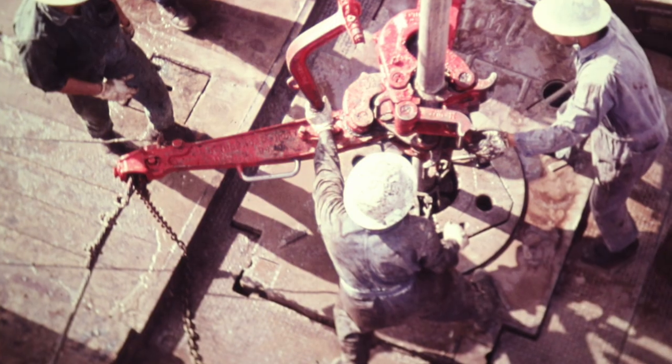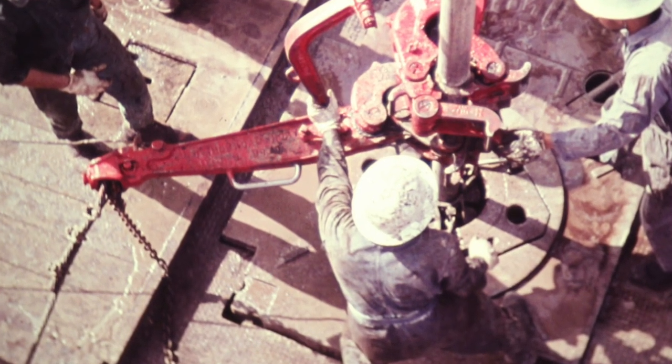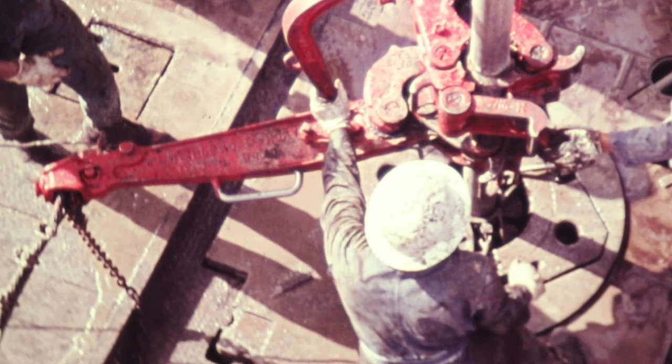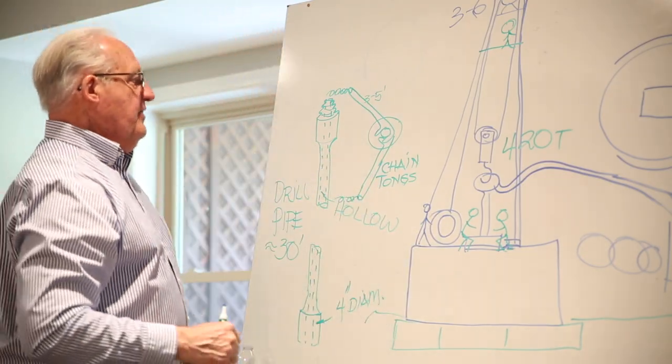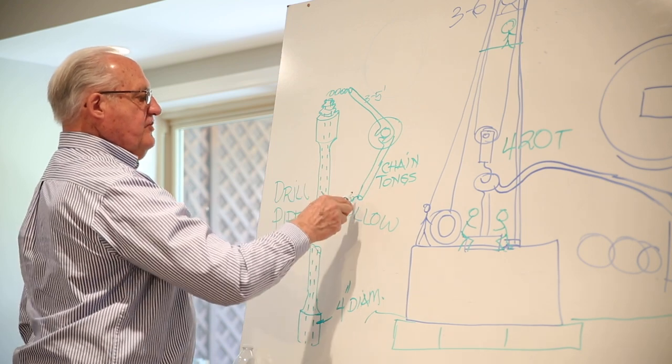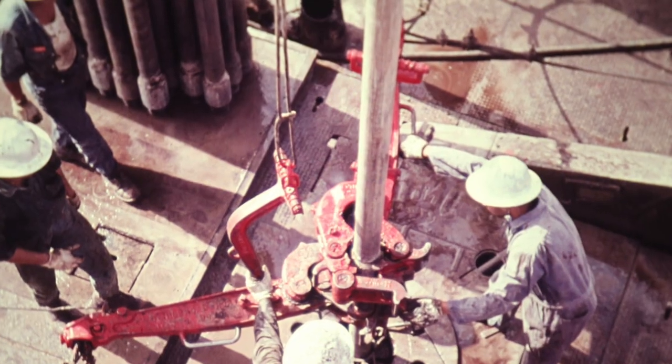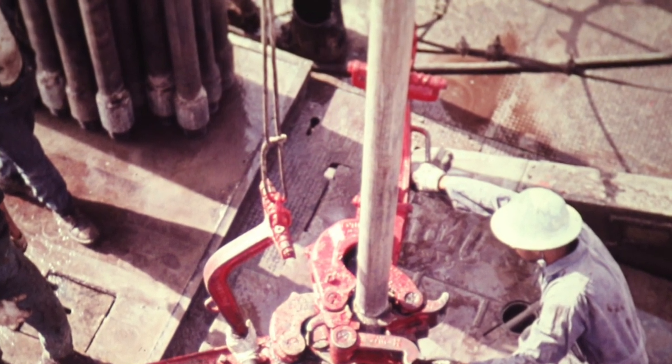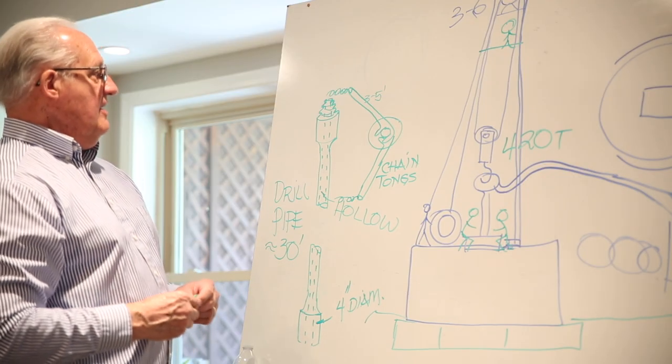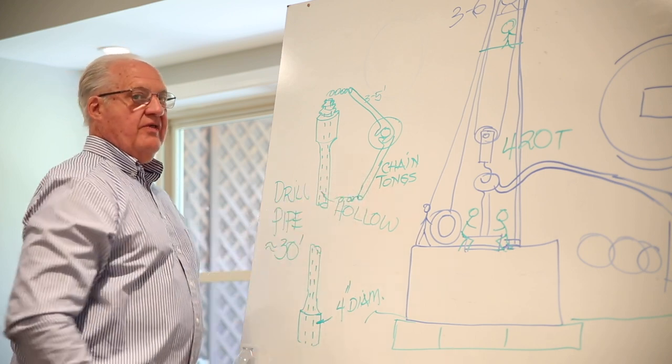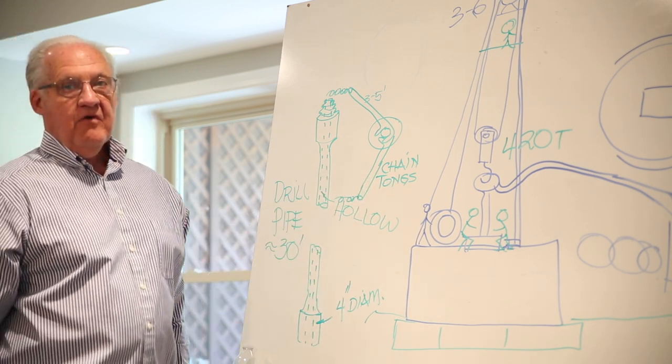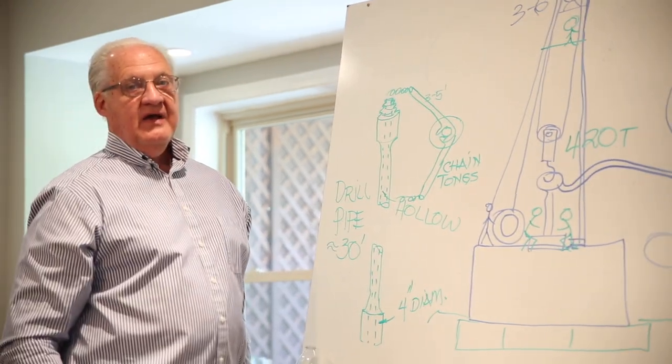And these chains pull those big wrenches together to tighten the pipe, or they go to the opposite side and pull them to loosen the pipe. But here's the whole point: one chain tong weighs a lot. It's suspended in the air by a cable. It has a counterweight. One man could not lift one of those with ease or possibly not even lift it.